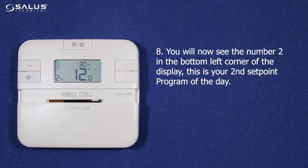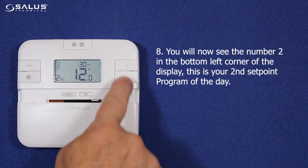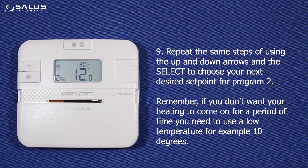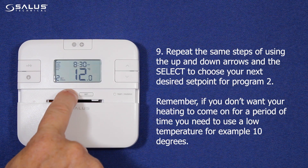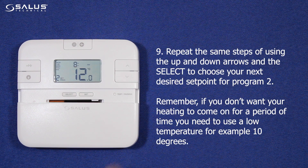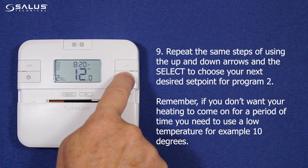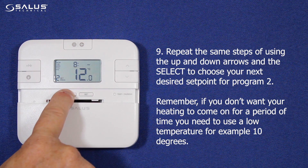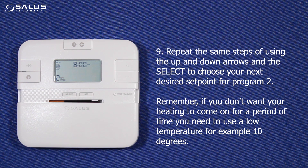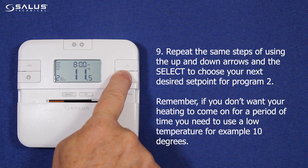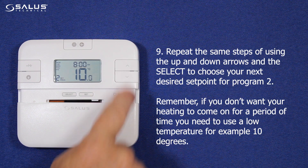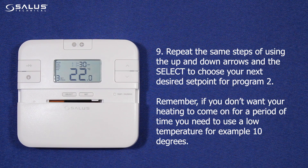Step 8: You will now see the number 2 in the bottom left corner of the display. This is your second set point program of the day. Step 9: Repeat the same steps of using the up and down arrows and the select button to choose your next desired set point for program 2. Remember, if you don't want your heating to come on for a period of time, you need to use a low temperature, for example 10 degrees.